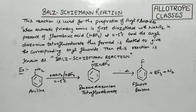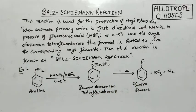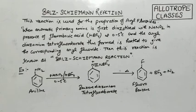When we heat up this compound, we get aryl fluoride. BF3 separates out and nitrogen gas is evolved. This reaction is called the Balz-Schiemann reaction, and it is especially used for the formation of aryl fluorides. Students, I hope the equation is now clear. I have also taught you the diazotization reaction previously.